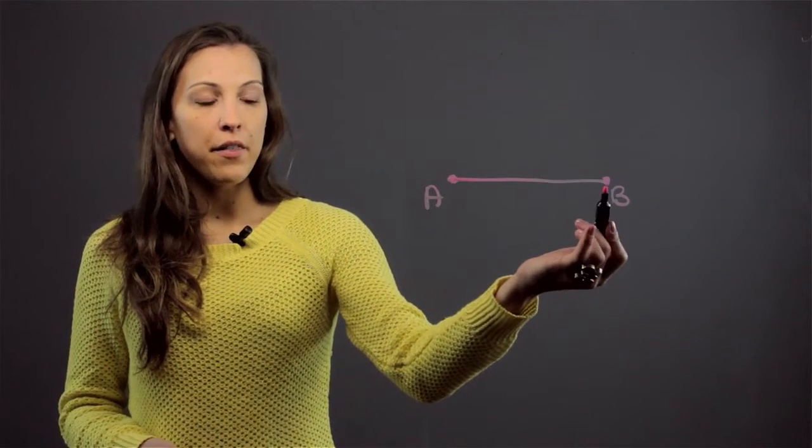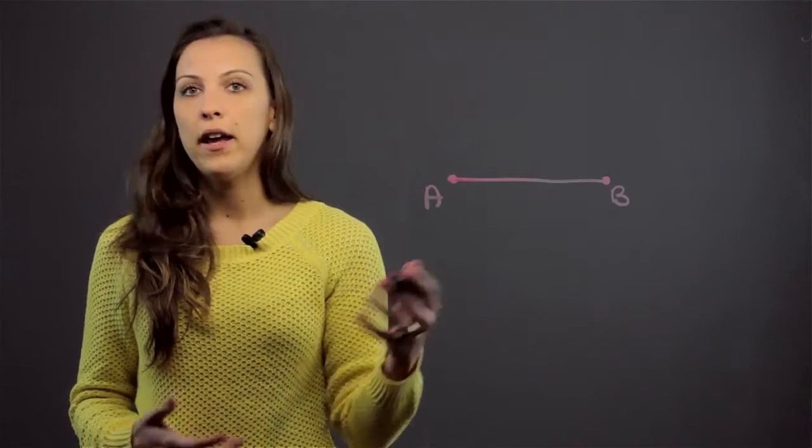You're going to create an angle from A and then another angle from B, and you'll let the third angle create itself.